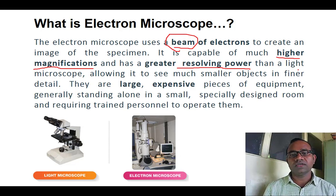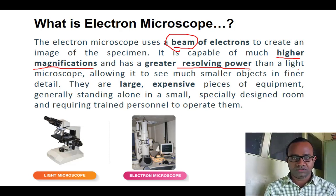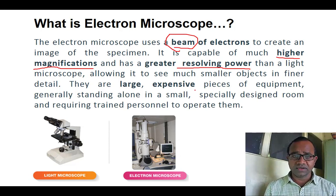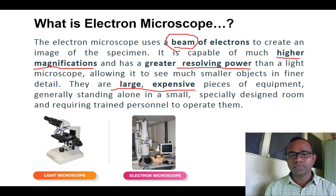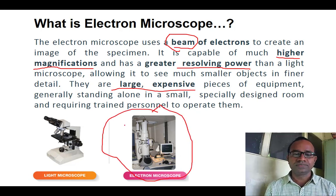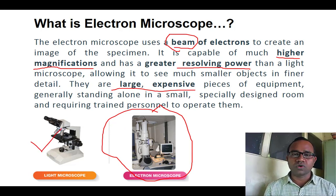As a definition, the electron microscope is a microscope that uses a beam of electrons with higher magnification and higher resolving power to observe fine details of smaller minute objects. They are large and expensive compared to the compound microscope, and generally require a full room-sized structure. Unlike the light microscope, which is handy and can be moved from place to place, the electron microscope is much larger.